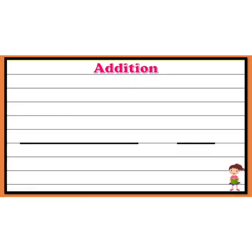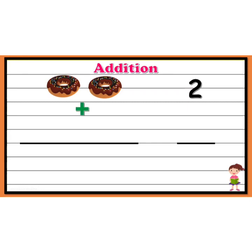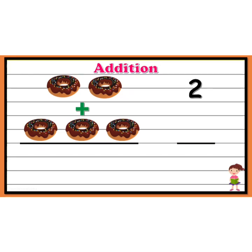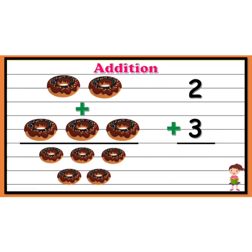Let's check out our next example and start counting the objects. Here we have one, two — so there are two donuts — plus one, two, three — so here it is plus three donuts. We have to find the total number of donuts. Let's count: one, two, three, four, five. Totally we have five donuts. So, two plus three gives five.